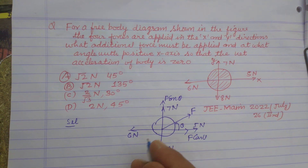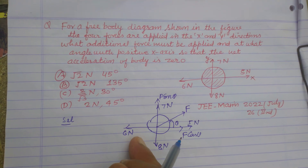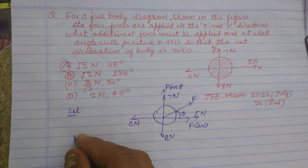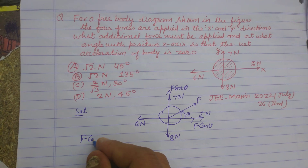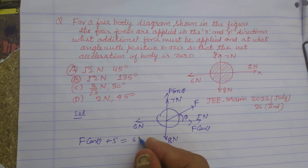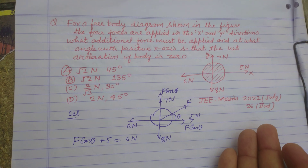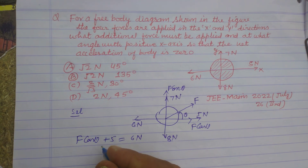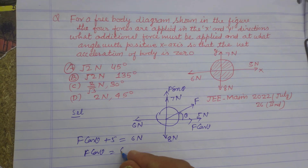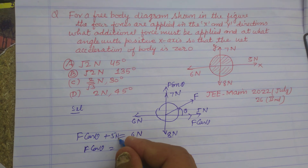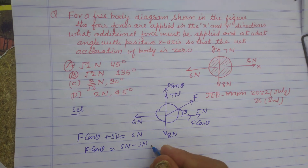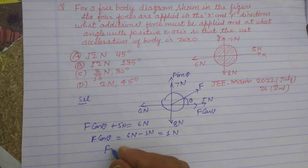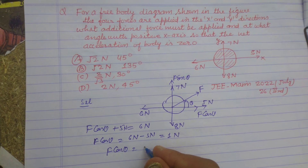For acceleration to be zero, the sum of the forces must equal zero. So F cos theta plus 5 newton equals 6 newton. Right side force equals left side force, so F cos theta equals 6 newton minus 5 newton, which is 1 newton. Therefore F cos theta equals 1 newton.